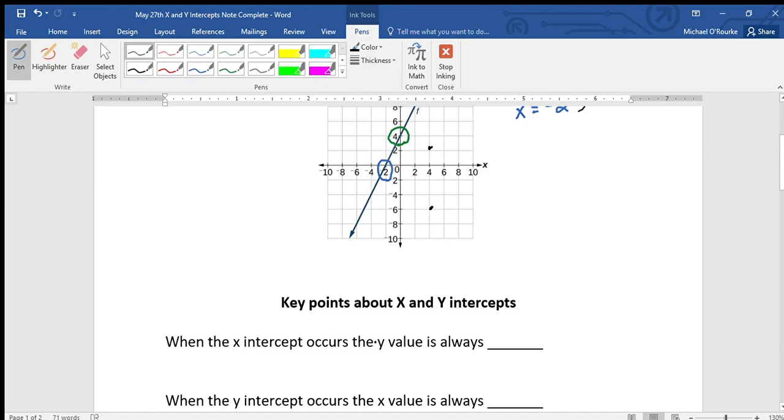Well, if I put a point here, that'd be negative 10 and the y would be zero. Put a point here, this would be six and the y would be zero. Put a point here, it would be two and the y would be zero. So when the x-intercept occurs, the y value is always zero.